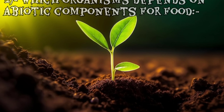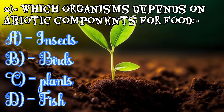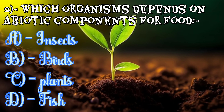Question number two: which organism depends on abiotic components for food? Option A is insects, option B is birds, option C is plants, and option D is fish. The correct answer is option C — plants.